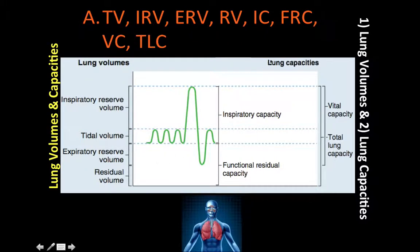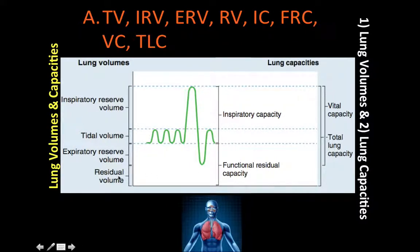Functional residual capacity (FRC) is the sum of the expiratory reserve volume and the residual volume. It's the volume that remains in the lung after a tidal volume has been expired. Importantly, because FRC includes residual volume, and residual volume cannot be measured using spirometry, FRC also cannot be measured by spirometry.